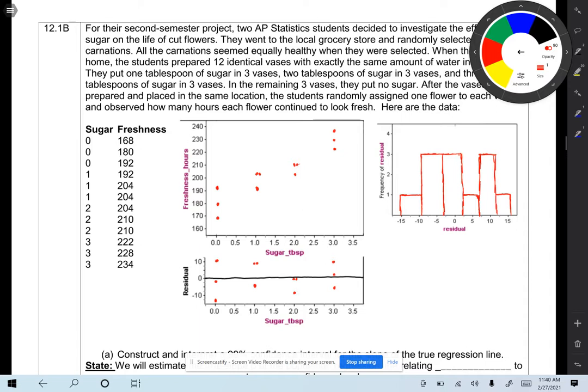For their second semester project, two AP Statistics students decided to investigate the effects of sugar on the life of cut flowers. They went to the local grocery store and randomly selected 12 carnations. All the carnations seemed equally healthy when they were selected. When they got home,